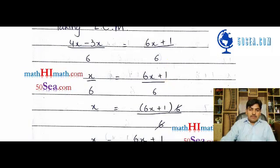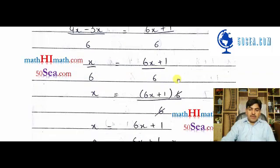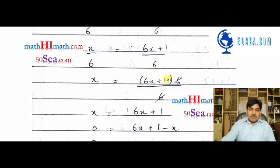Next step: 4x minus 3x equals x, so x/6 equals (6x + 1)/6. We take this six to the other side of the equal sign. It was dividing here, so it will multiply on the other side: (6x + 1) multiplied by 6, the sixes cancel out.